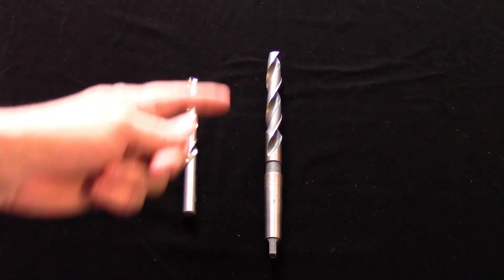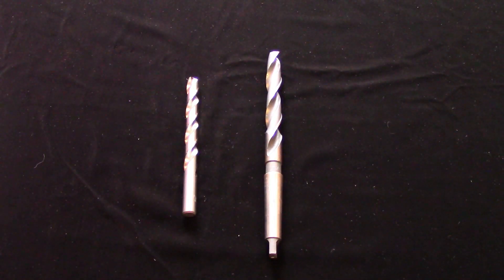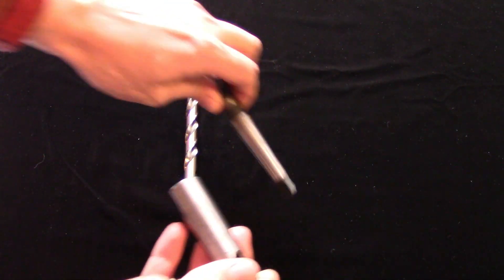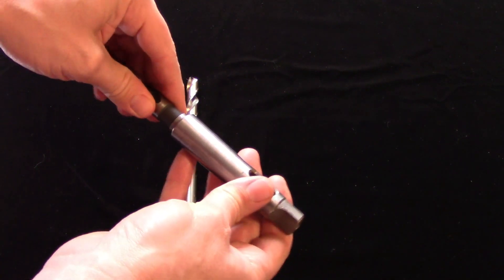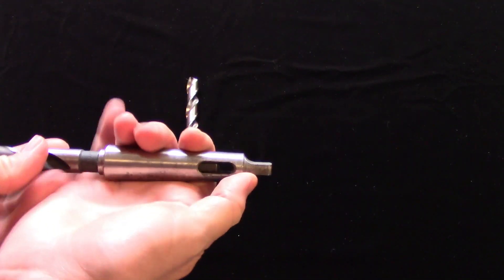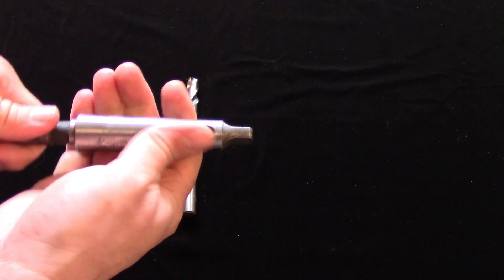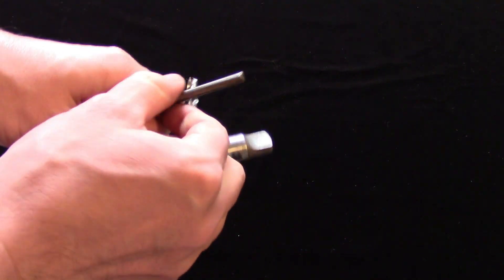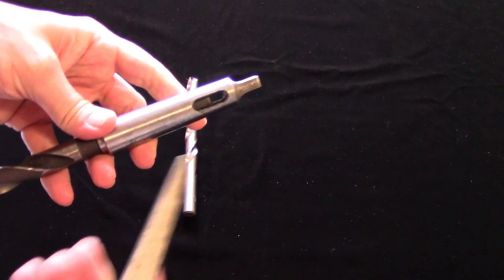Taper shank drills tend to be a lot longer than their straight shank counterparts. Adapter sleeves are available so you can hold different Morse taper sizes in your machine. There is a tang on the end of the taper to help remove the drill from the spindle or adapter sleeve. This is accomplished with a tapered drift by tapping it into the tang slot until the taper releases.